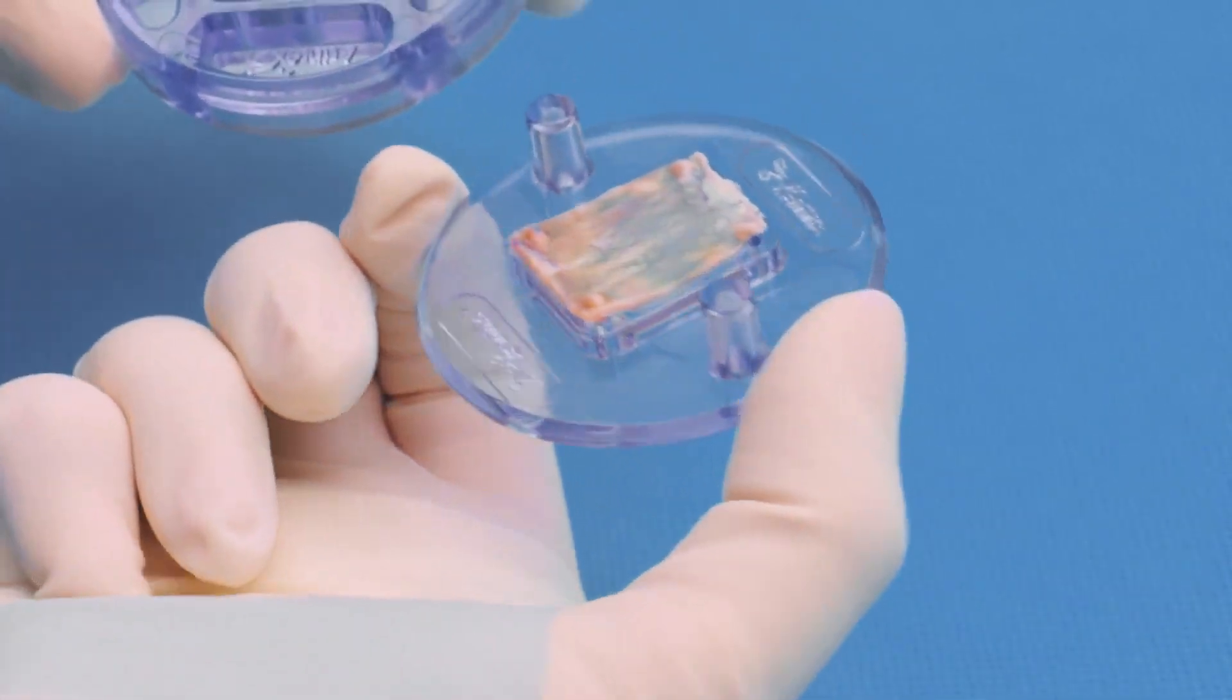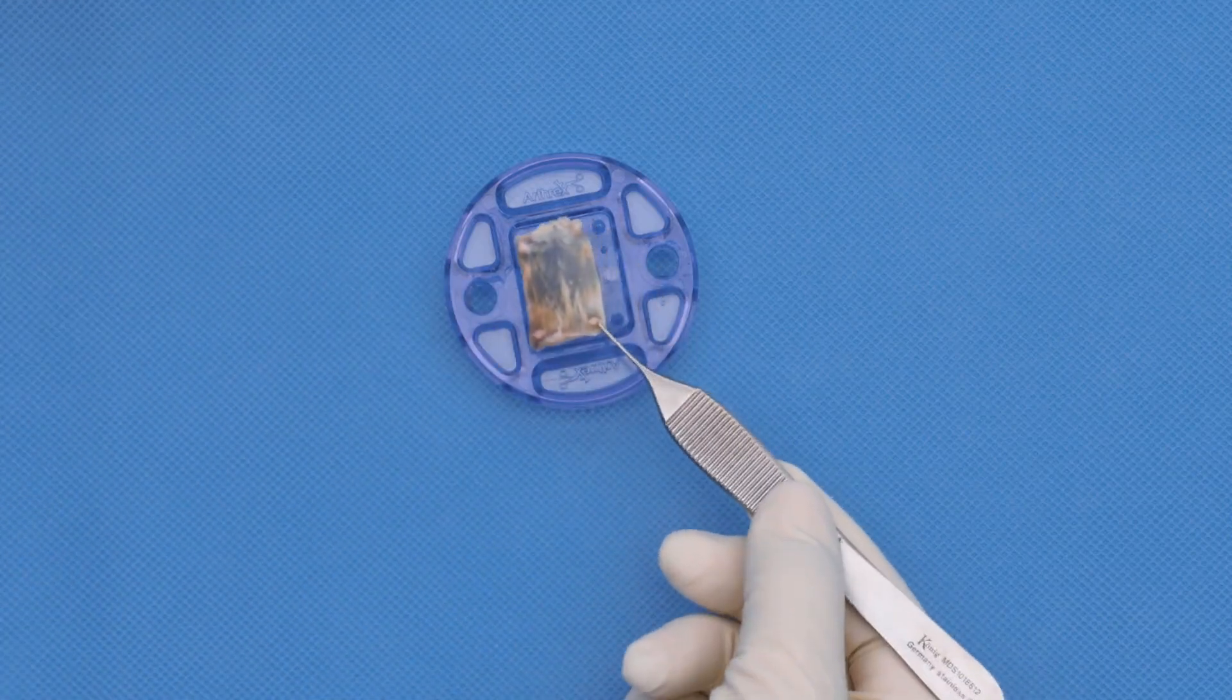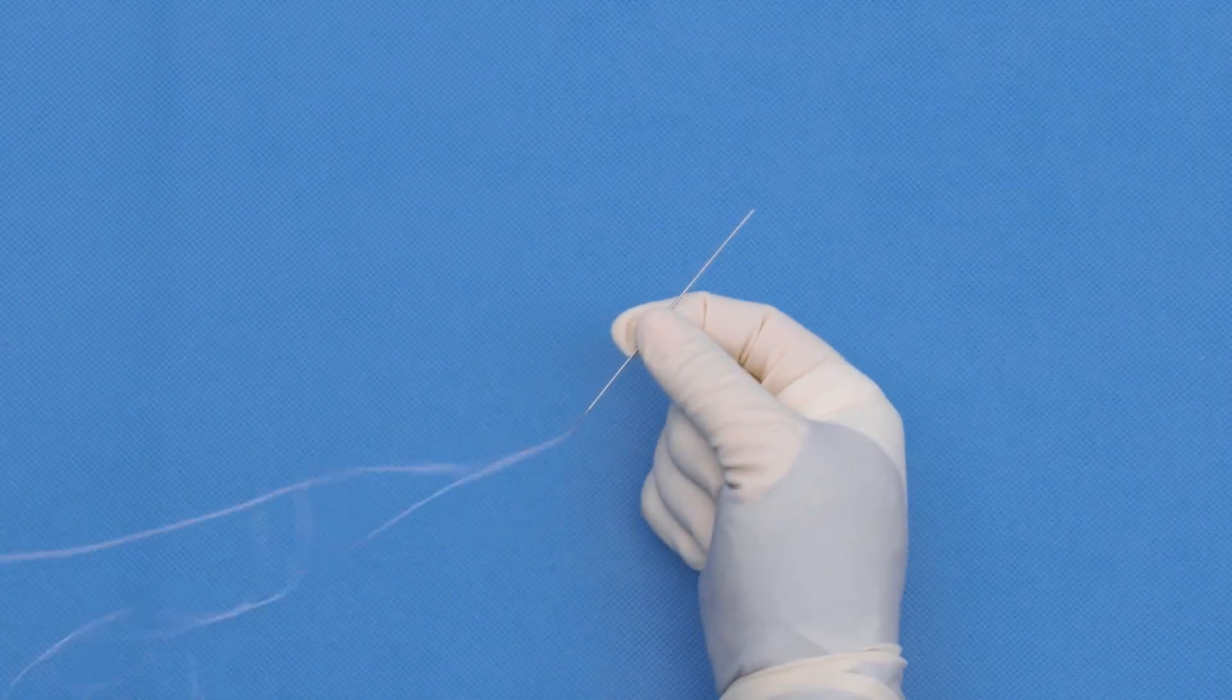If the graft is stuck to the top plate, move it to the bottom well to allow for easier suturing. The plates have 4 holes for suture passage. For the medial sutures, a fiber loop can be used.